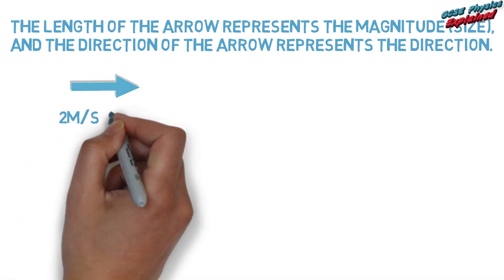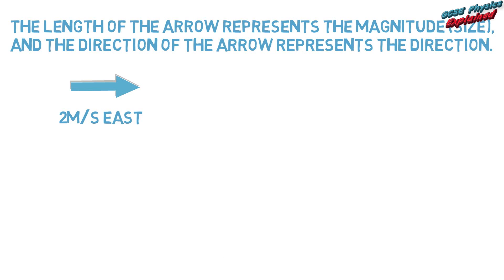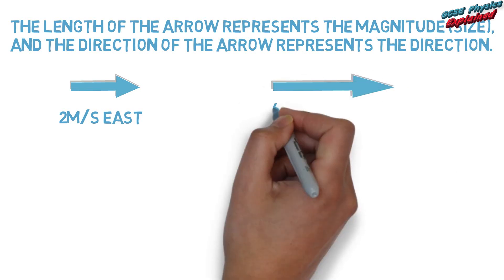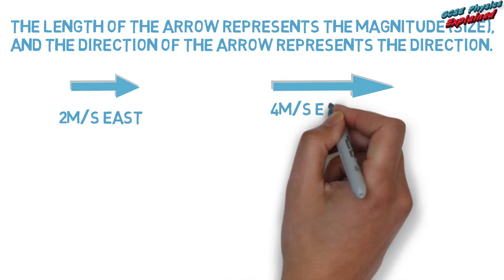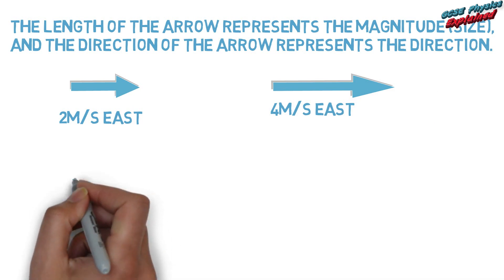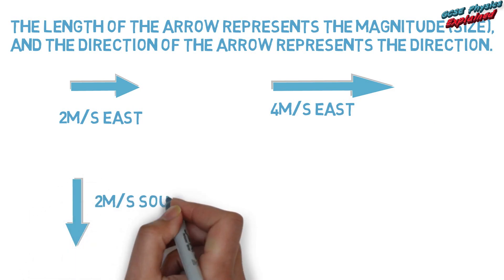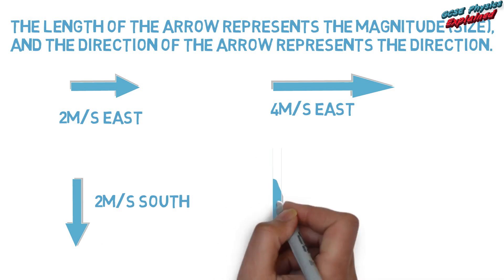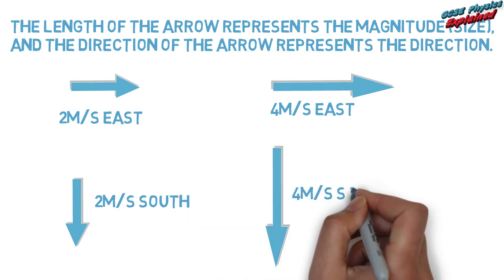Examples: 2 meters per second east. 4 meters per second east. 2 meters per second south. 4 meters per second south.